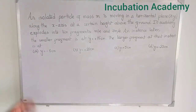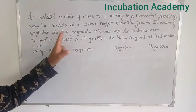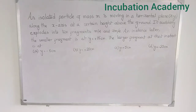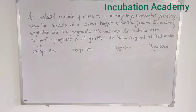The question is: an isolated particle of mass M is moving in a horizontal plane xy along the x-axis at a certain height above the ground. It suddenly explodes into two fragments m/4 and 3m/4. At an instance later, the smaller fragment is at y = +15 centimeters. We have to find where the larger fragment is at that instant.